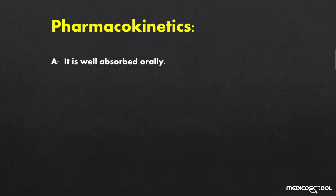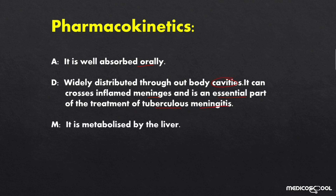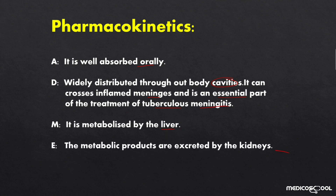Regarding pharmacokinetics: pyrazinamide is well absorbed from the GIT after oral administration. It is widely distributed throughout body cavities and can penetrate the meninges, making it an essential part of the treatment of tuberculous meningitis. Like ethambutol, it is metabolized mainly in the liver and the main metabolic products are excreted by the kidneys in the form of urine.